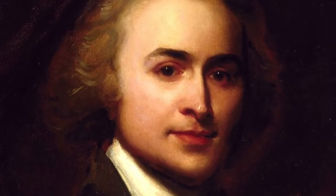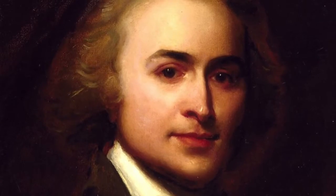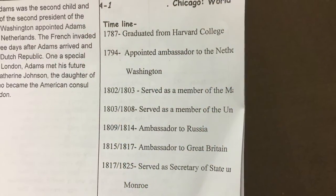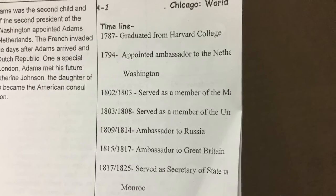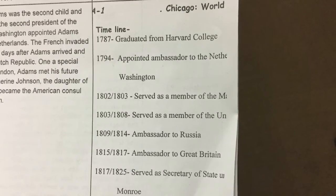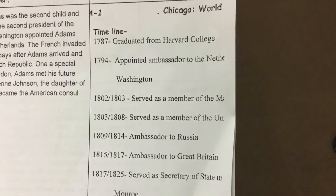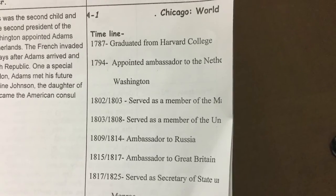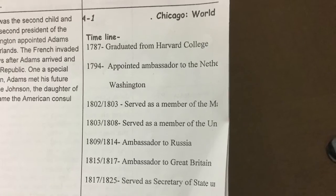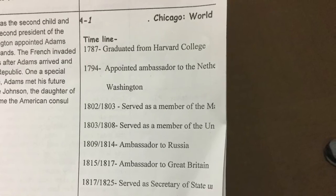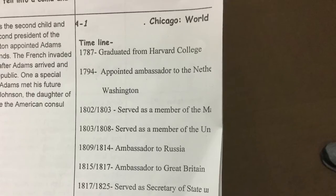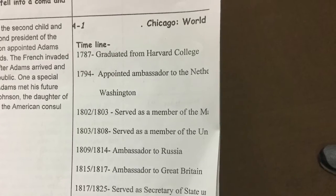John Quincy Adams was the second child and the eldest son of the second president of the United States. Washington appointed Adams minister to the Netherlands. The French invaded the country three days after Adams arrived and overthrew the Dutch Republic, on a special assignment in London. As you can see, here is a brief timeline on John Quincy Adams. One of the most important parts was from 1825 to 1829 when he served as the 6th president of the United States.